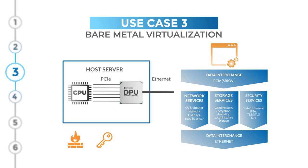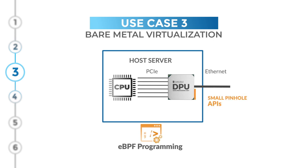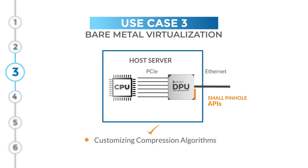The Fungible DPU also supports stateful firewall, authentication, and cryptographic protocols such as IPsec and TLS, as well as deep packet inspection. To support this level of flexibility, the Fungible DPU supports eBPF programming, which provides small pinhole APIs that allow users to customize specific functionality — such as checking packet validity, modifying encapsulation of packet headers, or customizing compression algorithms.